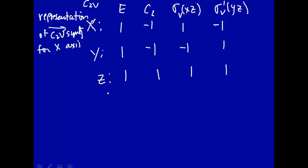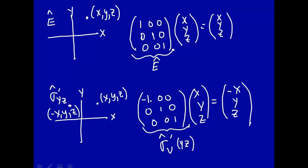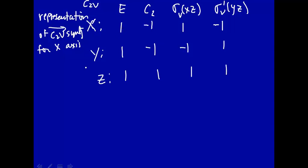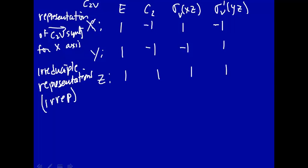We started representing operators in terms of matrices, but now we're representing the symmetry of various things — in this case the X, Y, and Z axes — as these numbers going across as a row in a matrix. Since these are just one-by-one matrices, you can't reduce them any further, so these are called irreducible representations, or irreps for short — irreducible representations of X, Y, and Z under C2V symmetry.